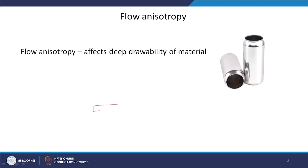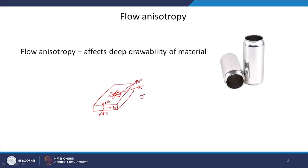There is a flow anisotropy. For example, let us take a rolled sheet. This is my rolling direction, transverse direction, and normal direction. I am measuring the tensile and flow properties in different directions — taking a sample from here, which I call 0 degrees, another sample at 45 degrees, and another sample parallel to TD, which I call 90 degrees.